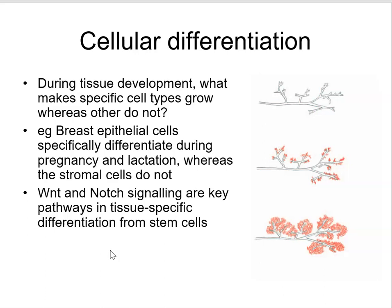Cellular differentiation is the process of changing from being a stem cell through to a differentiated cell. There are a whole complicated set of signaling pathways that determine whether cells will proliferate or not and whether they will differentiate into the final functional cell type. This cartoon illustrates breast epithelial cell differentiation, where the function is to secrete milk proteins into ducts. Key signaling pathways such as Wnt, Notch, and Hedgehog control cellular behavior.